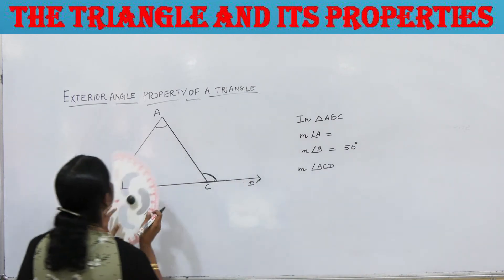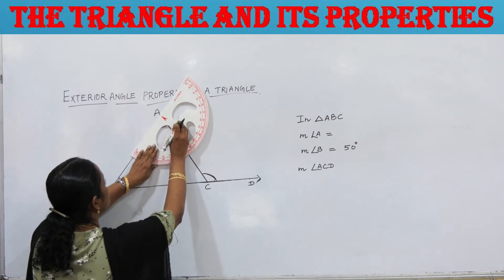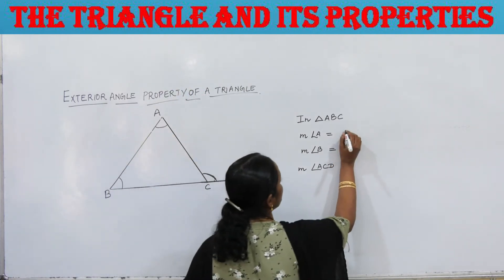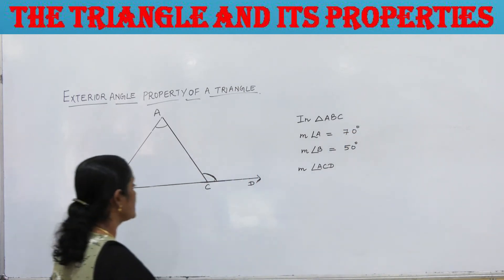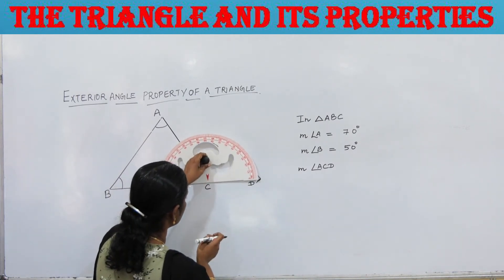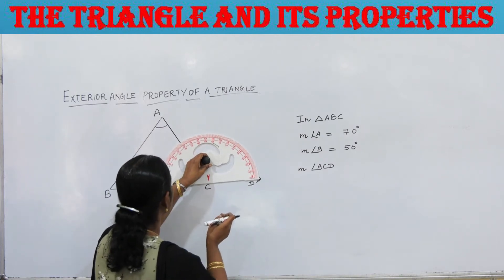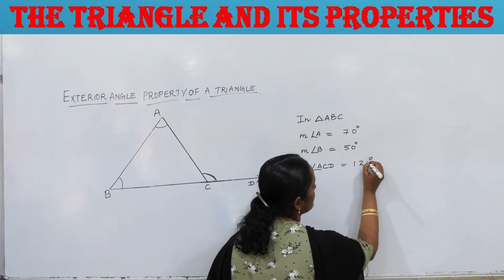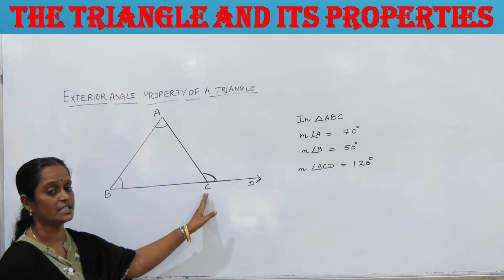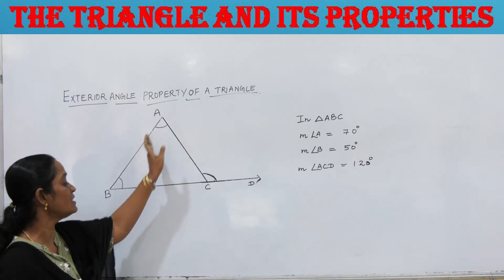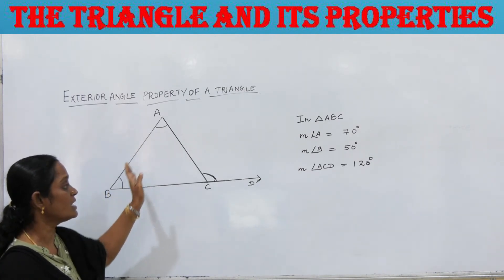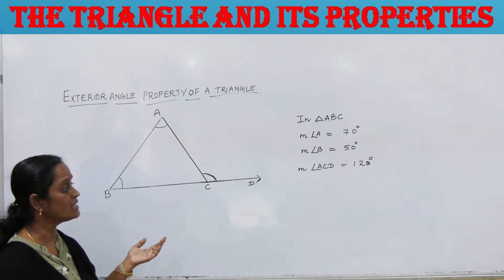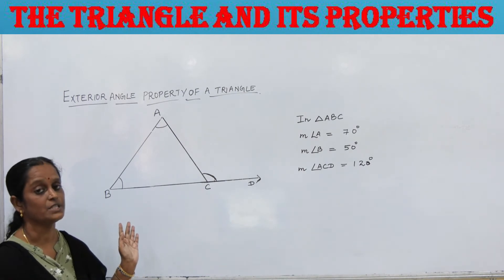Now measure angle A — it is 70 degrees. Then measure angle ACD — the measure of angle ACD is 120 degrees. The exterior angle ACD is 120 degrees, angle A is 70 degrees, and angle B is 50 degrees. Adding 70 plus 50 gives 120, confirming that the exterior angle equals the sum of the interior opposite angles.